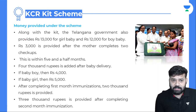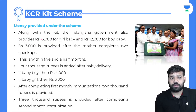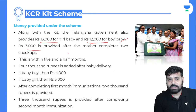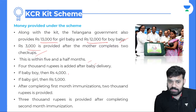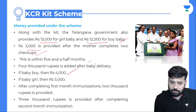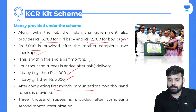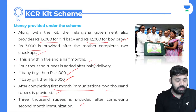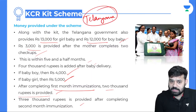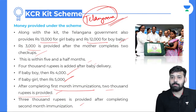Along with the kit, the Telangana government provides 30,000 rupees for a baby girl and 12,000 rupees for a baby boy. 3,000 rupees is provided after the mother completes two checkups within five and a half months; 4,000 rupees after delivery for a boy, and 5,000 rupees for a girl. 2,000 rupees after the first immunization, and 3,000 rupees after the second immunization. This is particularly important for candidates preparing for the Telangana State Public Service Commission examination.